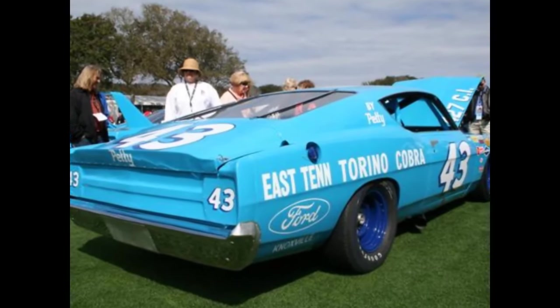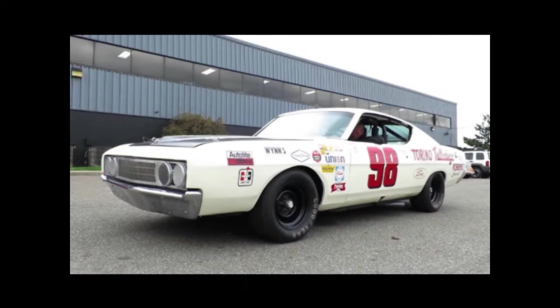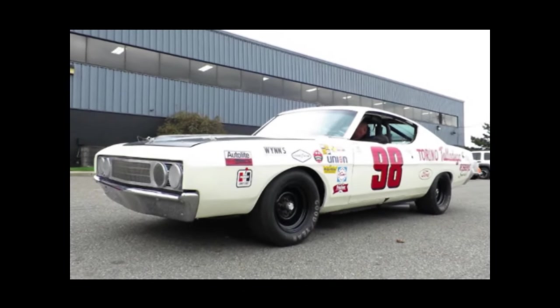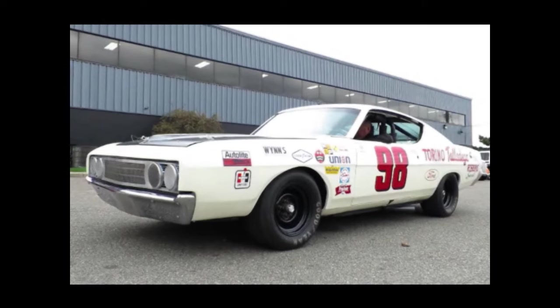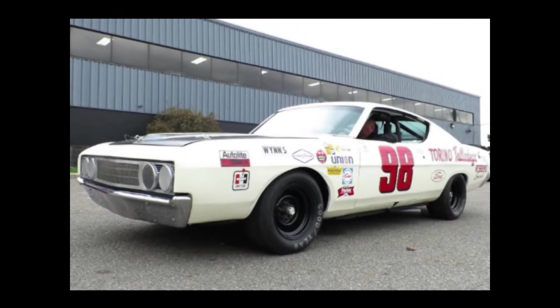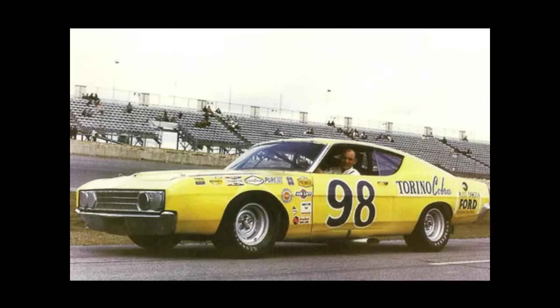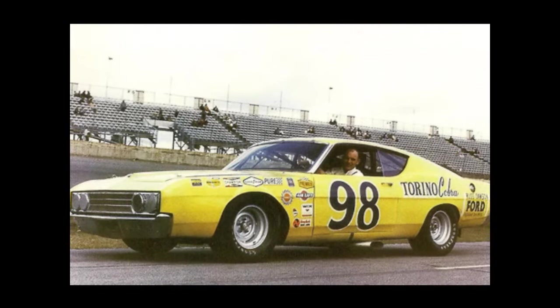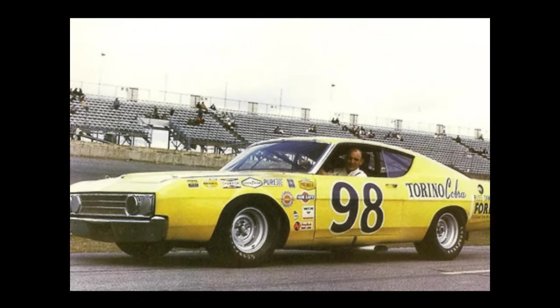The rocker panels of the Talladega were reshaped and rolled to allow Ford teams to run their racing cars about an inch closer to the ground while staying within NASCAR rules. This also greatly enhanced the top speed of the car by lowering its center of gravity and further reducing its wind resistance.